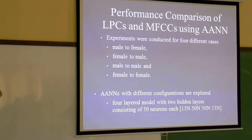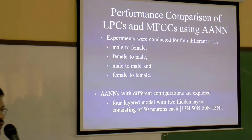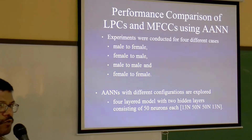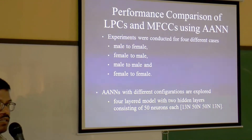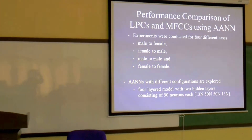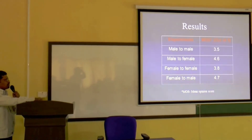In this task, we have taken four cases: male to female transformation, female to male transformation, male to male, and female to female. Experiments were done on auto-associative neural networks, and we converged on a configuration with 13 input neurons, 13 output neurons, and 50 neurons in each hidden layer. Here are the results we obtained.